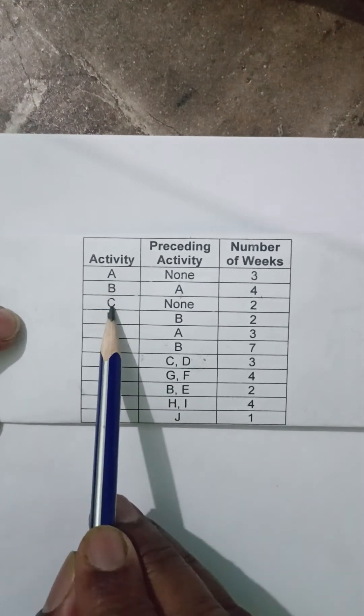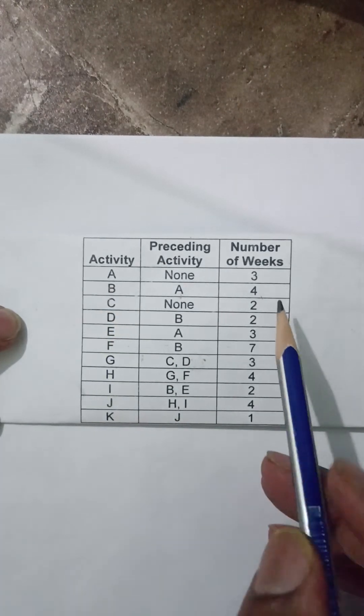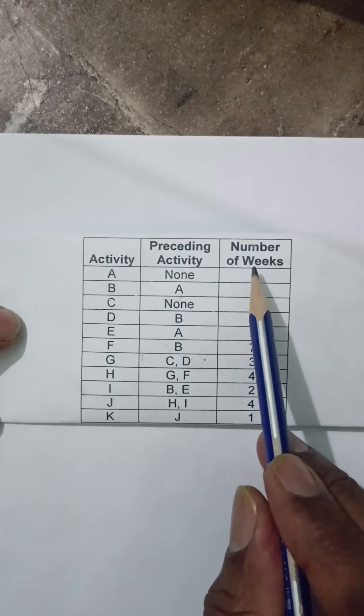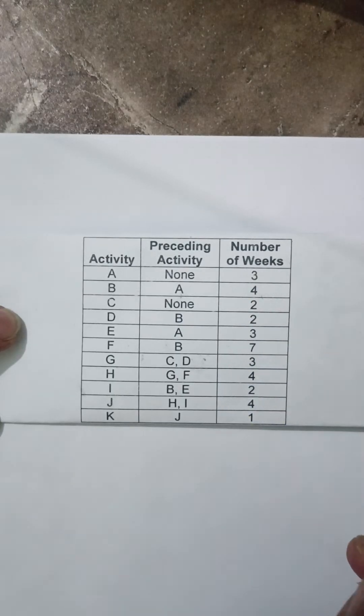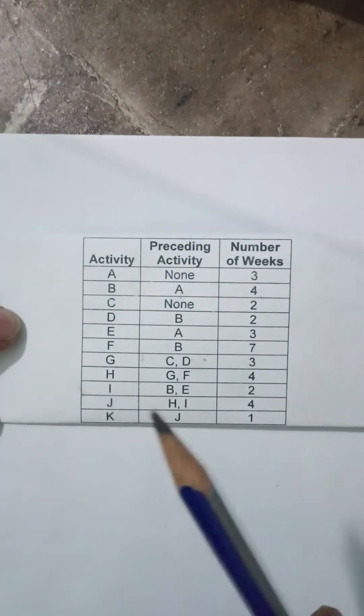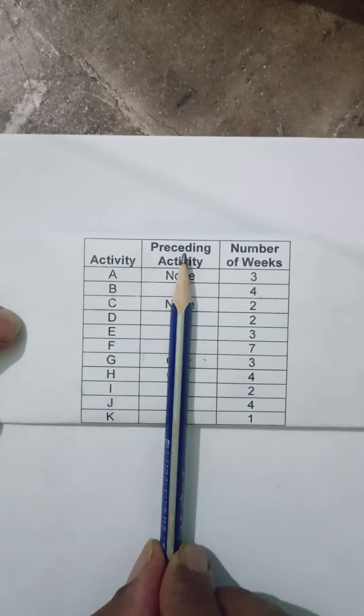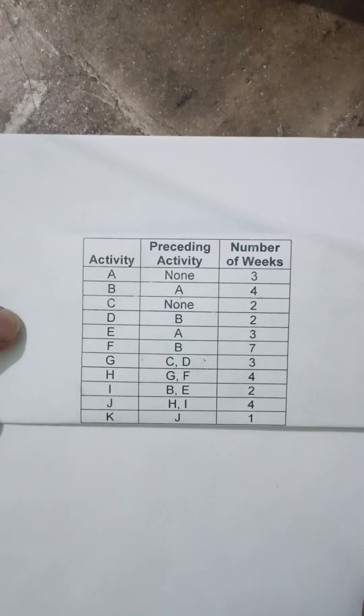These can be our starting activities. The third column gives you the number of weeks which we require. These are all in weeks. First we are going to concentrate on the first two particular columns and start our diagram.